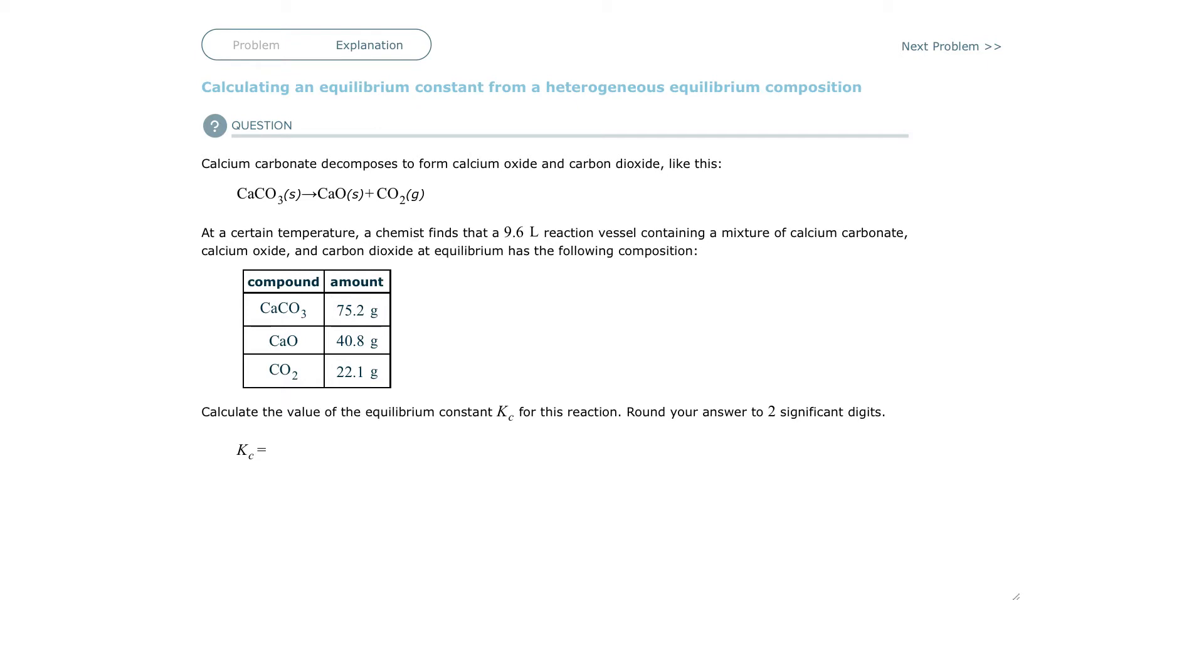Anything that's not a gas is not going to be written down when you do your expression. If you remember, an expression is going to be the concentrations of the products taken to the power of the coefficient in the balanced equation divided by the concentrations of the reactants taken to the power of its coefficient. So if I'm going to write an expression of this K, the constant is going to be the concentration of carbon dioxide taken to the first power, since this is to the first power.